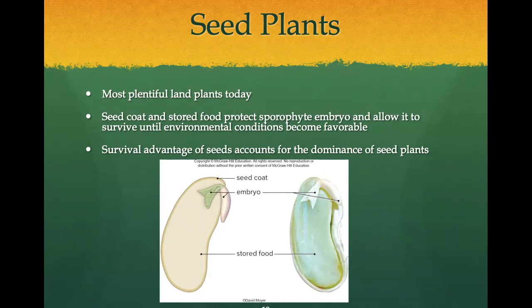Seed plants are the most plentiful land plants in the biosphere today. The seed coat on the outer layer and the stored food inside protects the sporophyte embryo and allows it to survive harsh conditions during a period of dormancy until environmental conditions become favorable for growth. Seeds can remain dormant for hundreds of years. When a seed germinates, the stored food is a source of nutrients for the growing seedling. This evolutionary adaptation has contributed to the success of the seed plants — in fact, most of the plant species on the planet are seed plants.